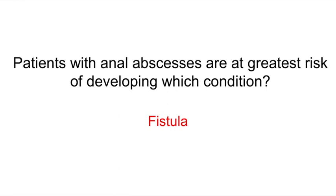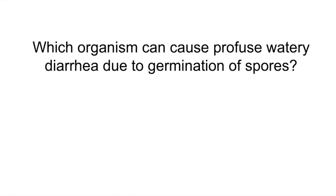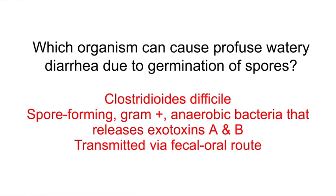Which organism can cause profuse watery diarrhea due to germination of spores? C. difficile. Recall that this organism is spore-forming, gram-positive, and an anaerobic bacteria. It releases exotoxins A and B, and it is transmitted through the fecal-oral route.